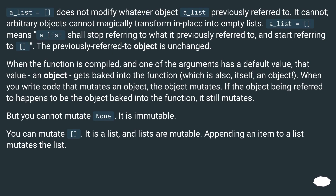`a_list = []` does not modify whatever object `a_list` previously referred to. It cannot — arbitrary objects cannot magically transform into empty lists. `a_list = []` means `a_list` shall stop referring to what it previously referred to and start referring to `[]`; the previously referred-to object is unchanged. When the function is compiled and one of the arguments has a default value, that value — an object — gets baked into the function, which is also itself an object. When you write code that mutates an object, the object mutates. If the object being referred to happens to be the object baked into the function, it still mutates. But you cannot mutate `None` — it is immutable. You can mutate `[]` — it is a list, and lists are mutable. Appending an item to a list mutates the list.